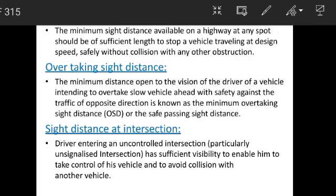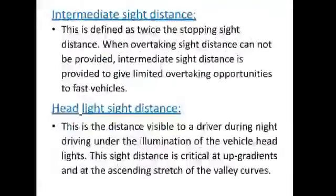Third, sight distance at intersections. We have to enter an uncontrolled intersection — particularly an unsignalized intersection. If there is no signal, it is an uncontrolled environment. There must be sufficient visibility to avoid a collision. At a four-direction intersection, we must brake and stop, then take a sight distance check before moving in.